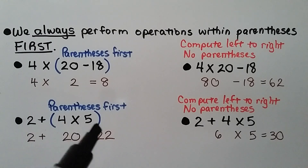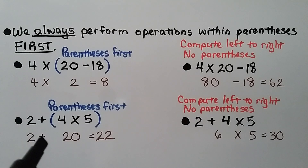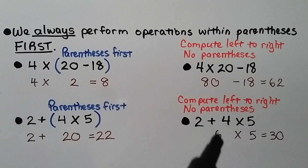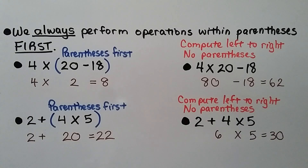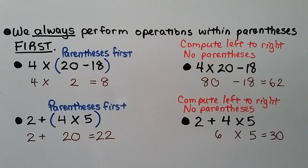For the expression (4 times 5) plus 2: doing the parentheses first, 4 times 5 is 20, then add 2, which equals 22. If we compute left to right with no parentheses, we'd have 2 plus 4 equals 6, times 5, giving 30. This order of operations wouldn't actually be done this way, because in the order of operations we multiply or divide before we add or subtract. Parentheses help tell us what to do first.